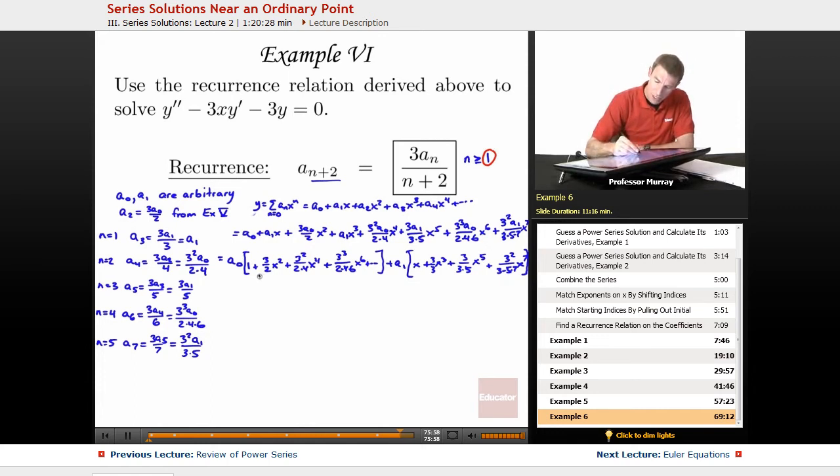And we can write a nice pattern for this. This is A0 times the sum from N equals 0 to infinity. It looks like I've got these even numbers. Remember that trick back from example 4. If you go back and look at example 4, there's a trick to write this as 2 to the N times N factorial.